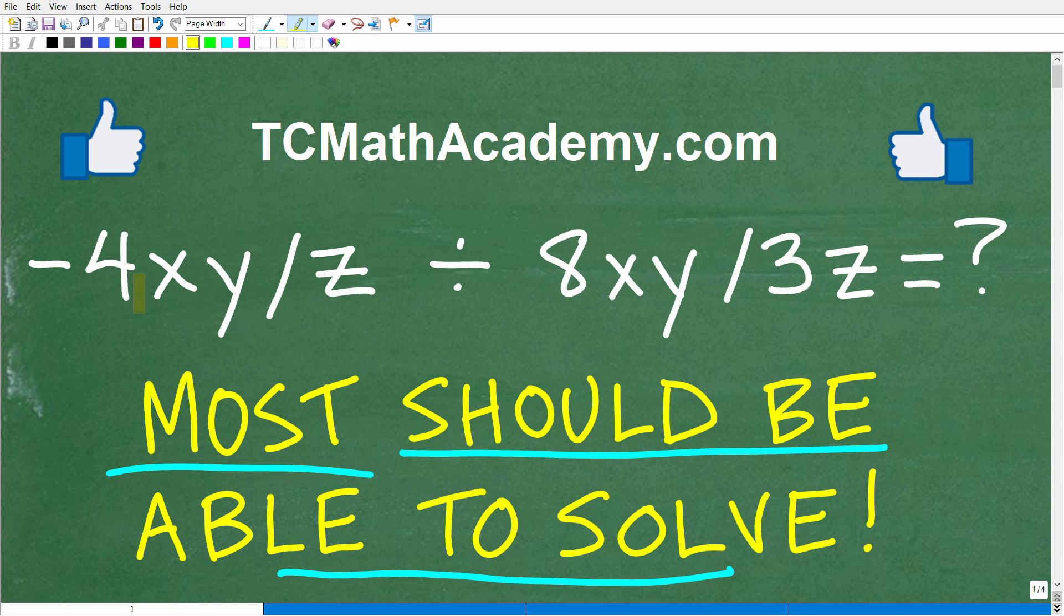Let's take a look at the problem here. We have negative 4xy divided by z, all this divided by 8xy divided by 3z. We're looking to simplify this expression.